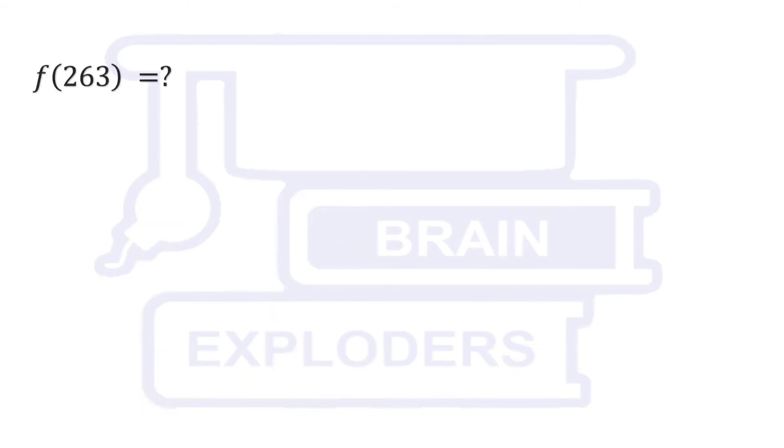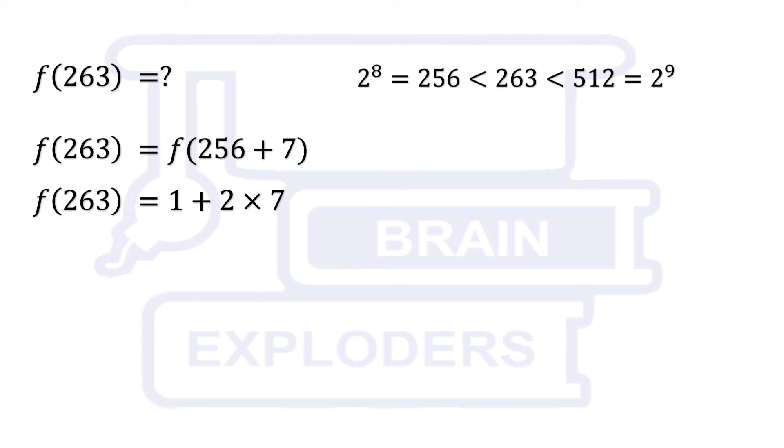Let's calculate f(263). 263 lies between 2 to the power 8 and 2 to the power 9. Subtract 2 to the power 8 from 263. We get 7. So, it can be written as 256 plus 7. So, f(263) is equal to 1 plus 2 times 7.